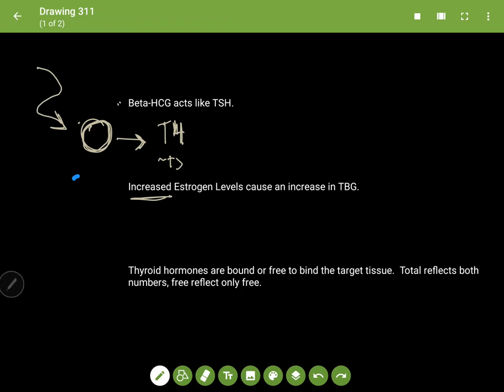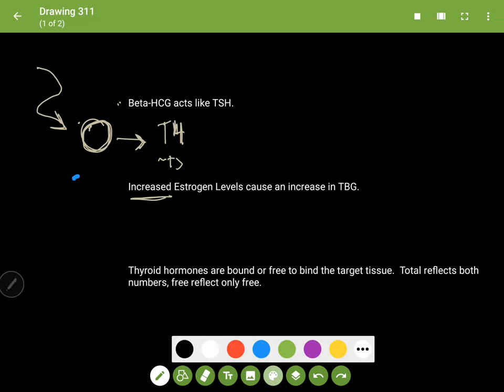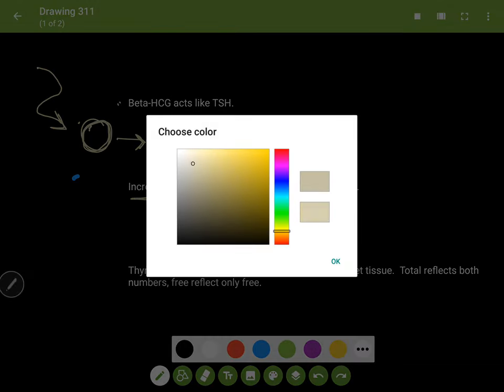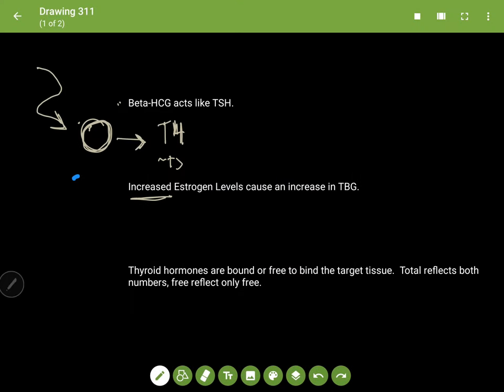Now in response, the TSH is going to decrease because if you have beta-HCG stimulating the thyroid and the T4 increases over normal, you're going to have a decrease in TSH in response.